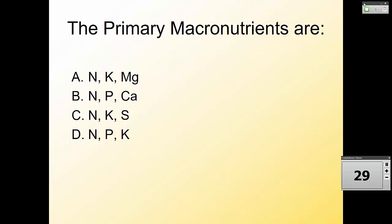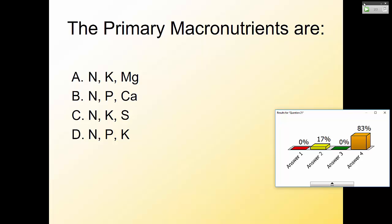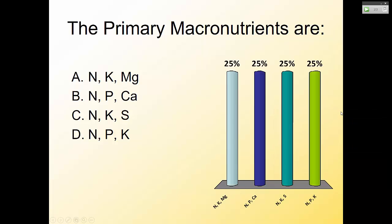What are the primary macronutrients? The answer is D. Calcium is a macronutrient, but it's a secondary one. NPK — that's what's on your fertilizer bag — are the primary macronutrients. We're going to talk mainly about N and P when we discuss manure management.